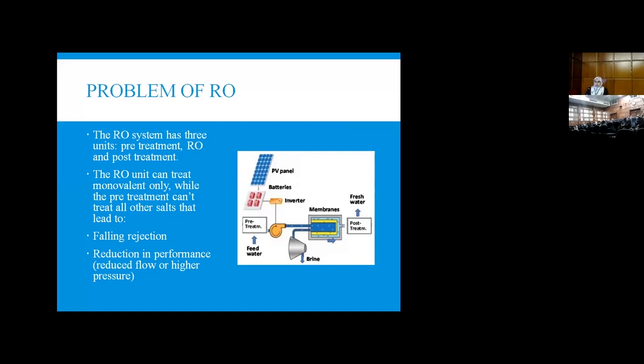The most famous type of membrane is reverse osmosis. But they have many problems. The reverse osmosis system has three units: pre-treatment unit, the RO treatment unit, and post-treatment unit.